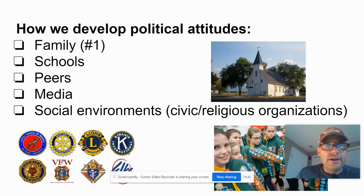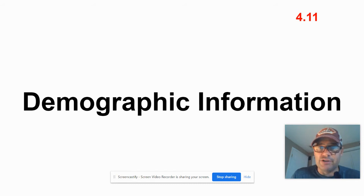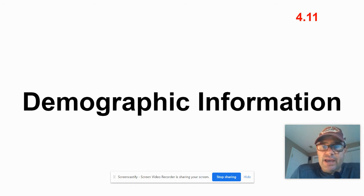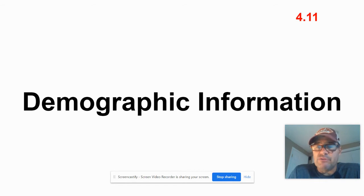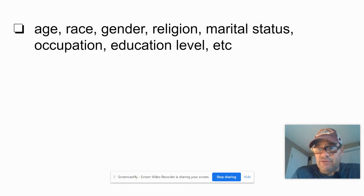We're moving on to the next card: demographic information and how that impacts our ideology and how we vote. 4.11. First, we've got to define what demographics are. If you've taken an AP test or SAT, you have filled out demographic information about yourself. It's your age, race, gender, religion, marital status, occupation, education level — all of those things are demographics.